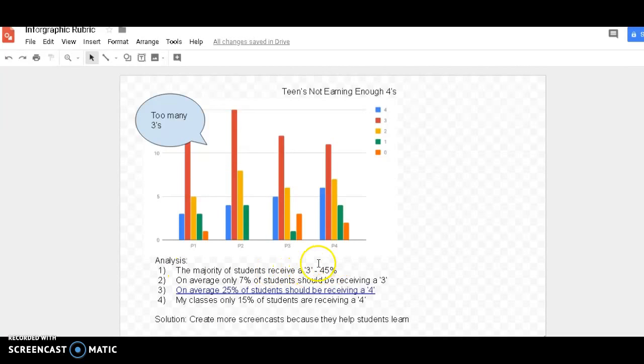that the majority of my students are receiving about a 45%. On average, 7% of students should be receiving a 3%. On average, 25%, etc.